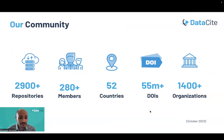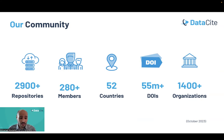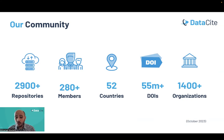Here is a snapshot of the DataCite community. We have more than 2,950 institutional repositories connected with us, using our open infrastructure to register research outputs with DataCite DOIs. We have more than 280 members from 52 countries, and so far we have issued 55 million DOIs. Overall, across the globe, we collaborate with 1,400 research organizations.